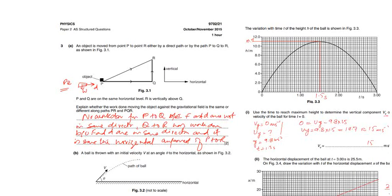So first of all, the work done from P to Q is zero. Why? Because the gravitational force and the displacement are perpendicular, not in the same direction. So no work done for P to Q because F and D are not in the same direction.